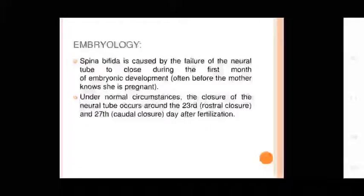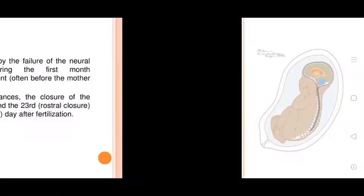Embryology: Spina Bifida is caused by the failure of the neural tube to close during the first month of embryonic development, often before the mother knows she is pregnant. Under normal circumstances, closure of the neural tube occurs around the 23rd day for rostral closure and the 27th day for caudal closure after fertilization.